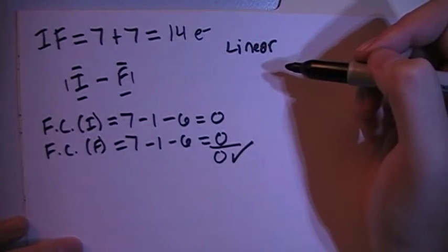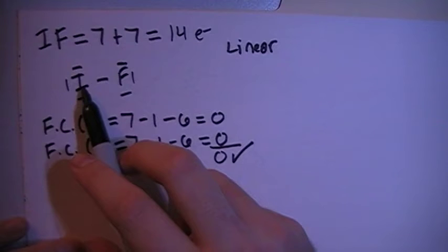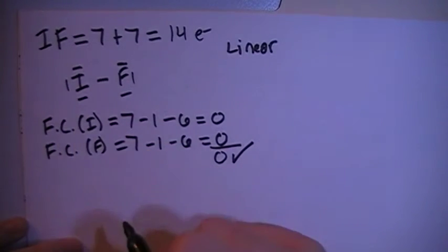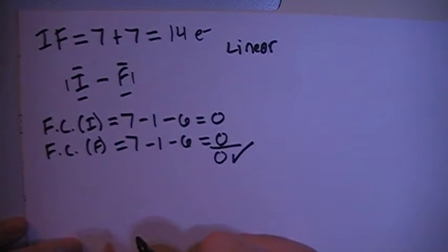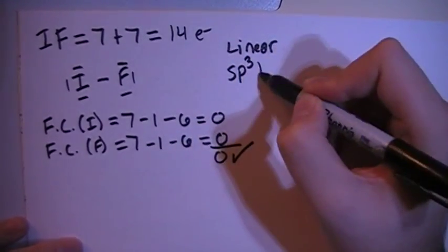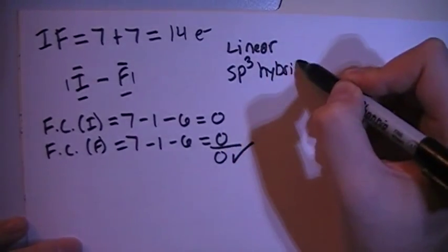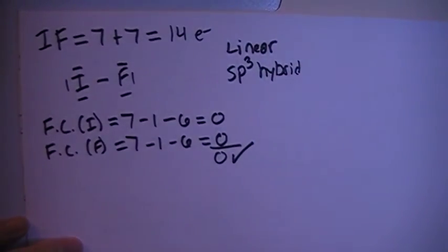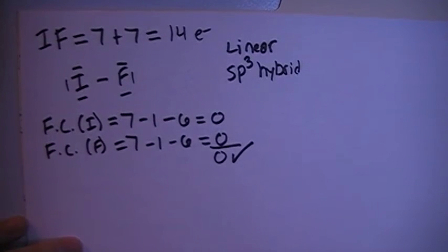And in terms of hybridization, looking at the iodine here, there's 1, 2, 3, 4 electron groups, which means we need 4 hybrid orbitals, so we're going to go with sp3 hybrid. So 1s and 3ps for a total of 4 hybrid orbitals to match the 4 electron groups.